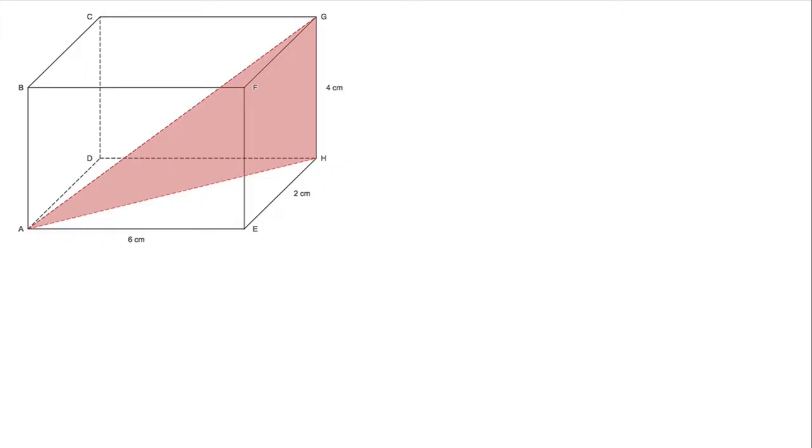If I draw that triangle separately, you can see I've only got one length here, which is four centimeters. In order to find AG, I need this length AH, and then I can use Pythagoras.